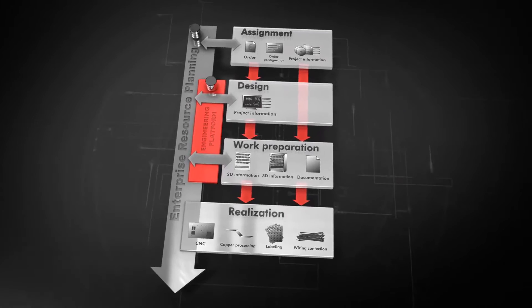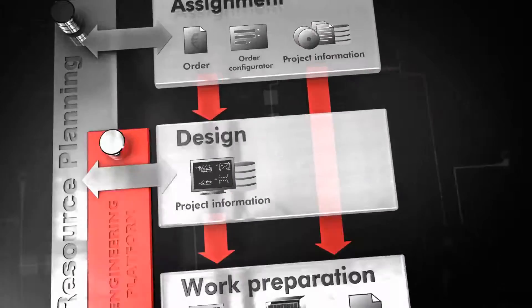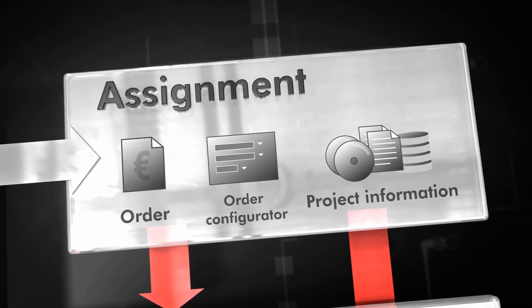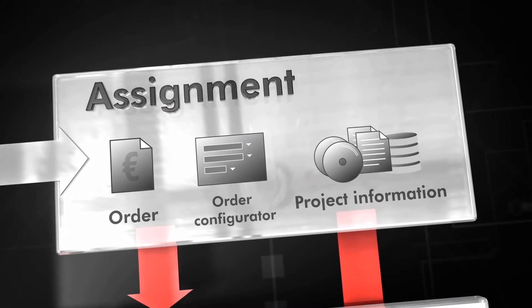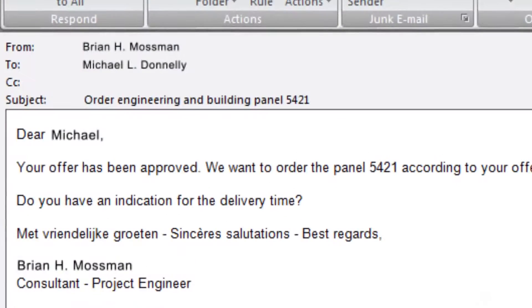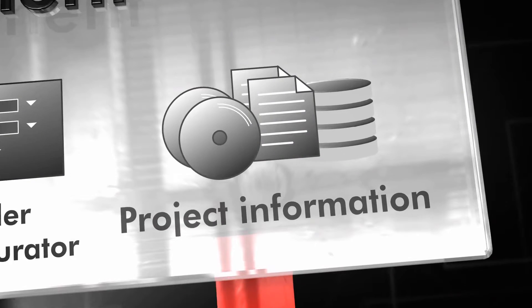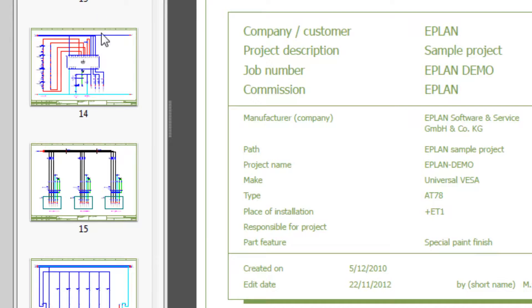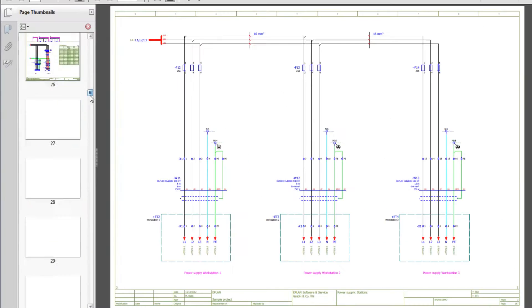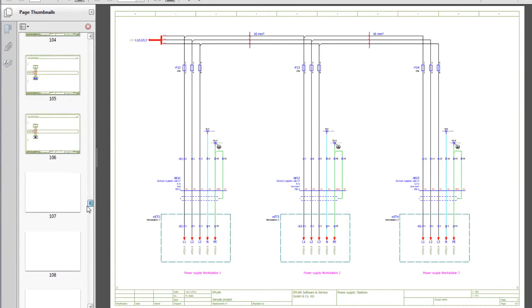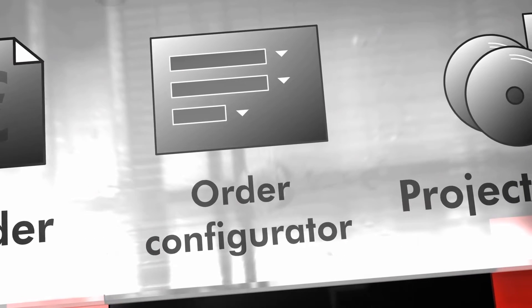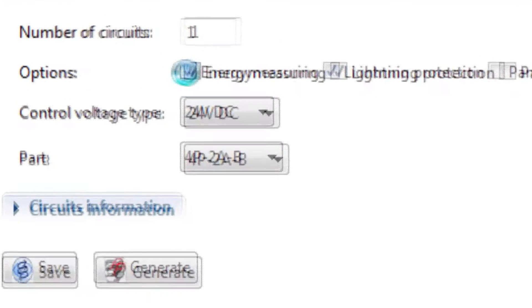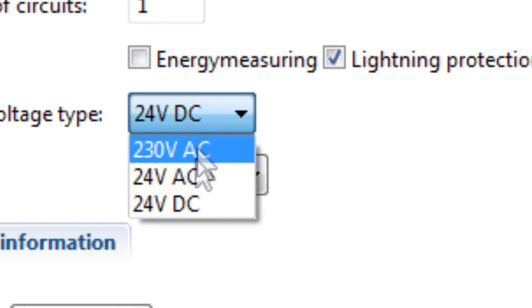An increase in efficiency can already be obtained during the assignment phase. Whether the assignment is an order in which you are responsible for the design yourself, if all the necessary product design and information is supplied to you by your customer, or the order is created by an order configurator, it's always important that this information is compatible with your digital process.